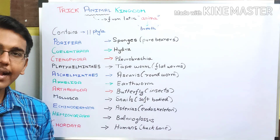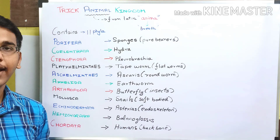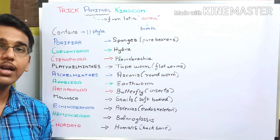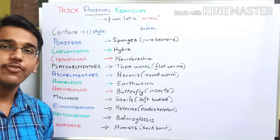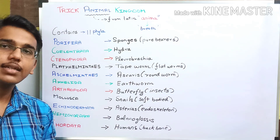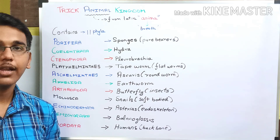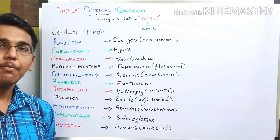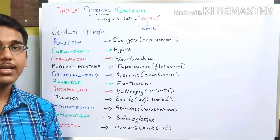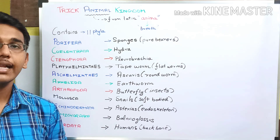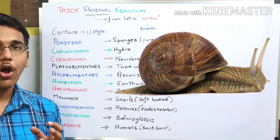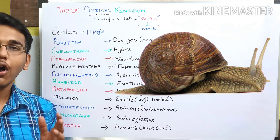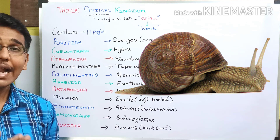Next we have phylum Mollusca, which is the second largest phylum present in the animal kingdom. The example of phylum Mollusca is snails. A characteristic feature of Mollusca is their soft body and hard shell.